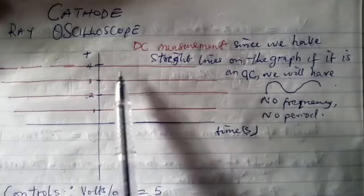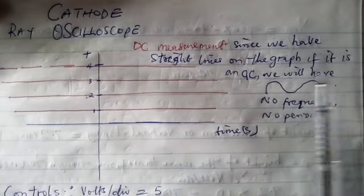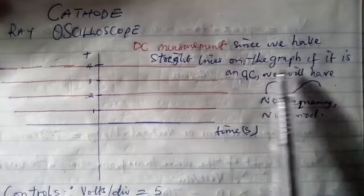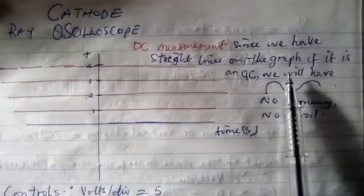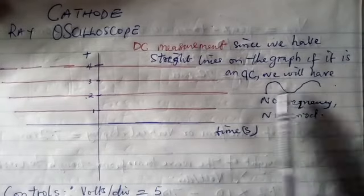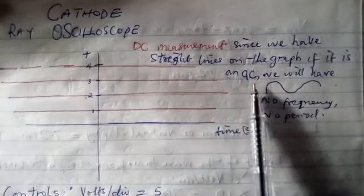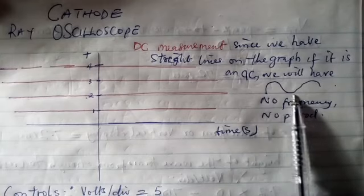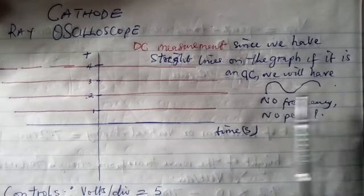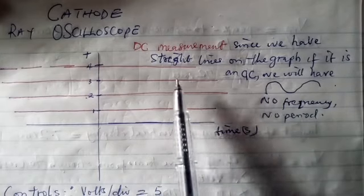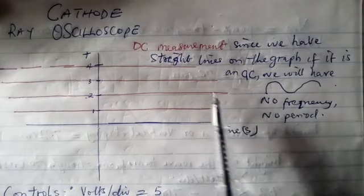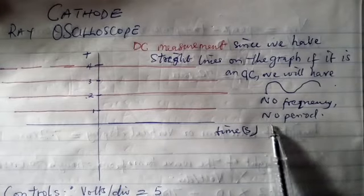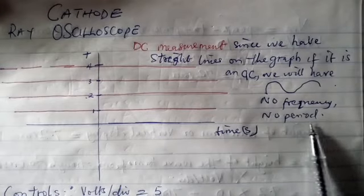In this case, I said DC measurement, since we have straight lines on the graph. If it is an AC, we will have a sinusoidal form. And because it is a DC measurement, you are not going to talk about the frequency, and you are not going to talk about the period.